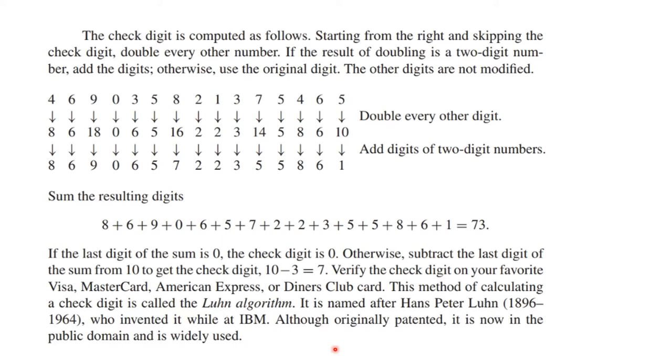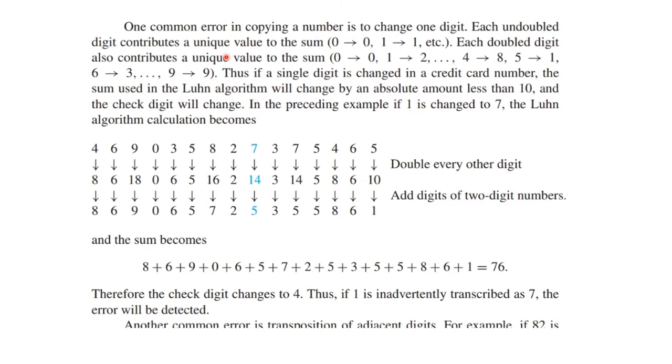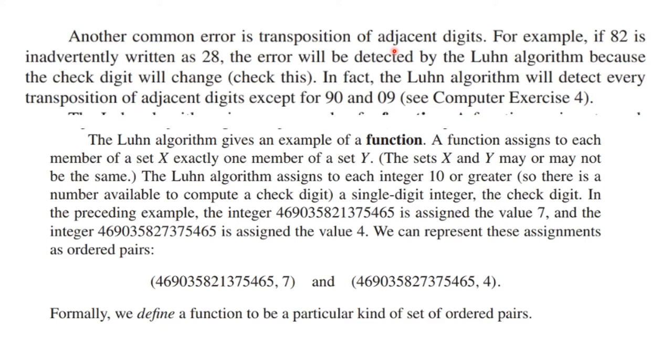And you can check your card to see if they're using this algorithm, and they probably are. It does detect a bunch of common errors. For example, if you make one digit mistake, like here, if you made a mistake in that digit, it will detect that and the check digit will not match. Another common error is to transpose adjacent digits, so instead of writing 82, you write 28. This Luhn algorithm will detect every transposition of adjacent digits except for transposing 90 and 09.